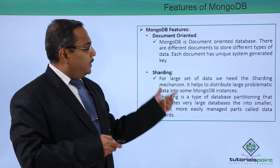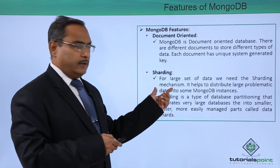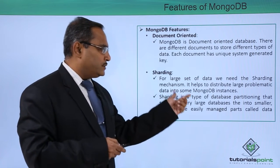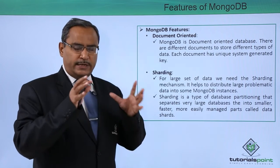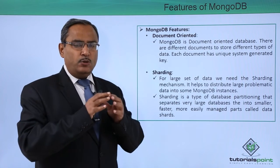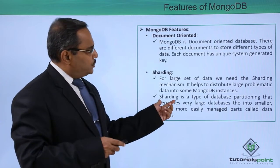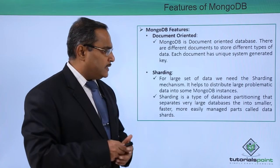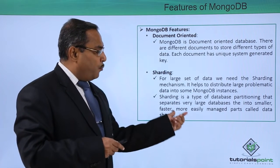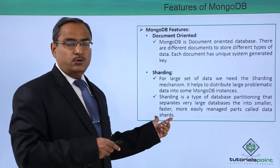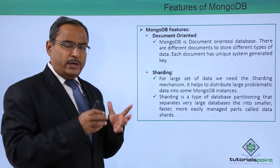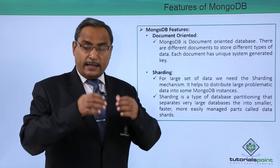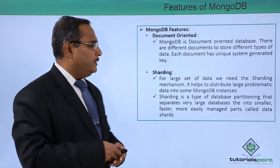Next is sharding. For large sets of data, sharding helps to distribute data across multiple MongoDB instances. The data is divided and stored onto multiple machines. Sharding is a type of database partitioning that separates very large databases into smaller, faster, more easily manageable parts known as data shards. When the database size grows, it is divided into multiple shards stored on multiple different machines.